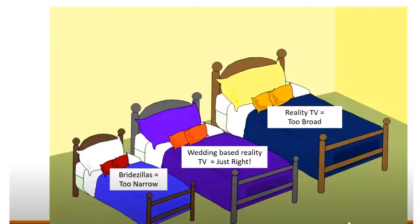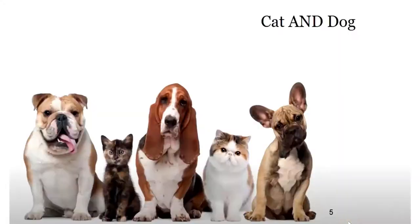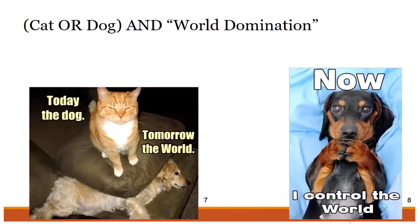Before we begin our sample Galileo search, let's talk about Boolean operators and other database-specific language that will improve your search. Boolean operators consist of OR, AND, and NOT. For example, 'cat OR dog' will find articles about cats or dogs, while 'cat AND dog' will find articles talking about both. We use quotation marks to search for concepts as phrases — so putting quotations around 'cat dog' will find articles about the Nickelodeon show Cat-Dog.